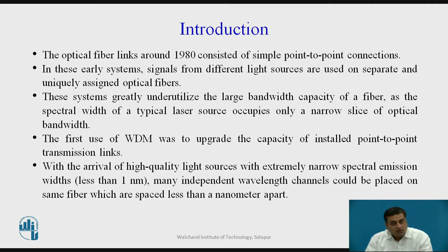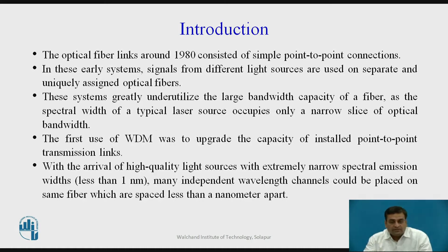These systems greatly underutilized the large bandwidth capacity of optical fiber, as the spectral width of a typical laser source occupies only a narrow slice of optical bandwidth, leaving the remaining optical bandwidth unused. The first use of wavelength division multiplexing was to upgrade the capacity of installed point-to-point transmission links.